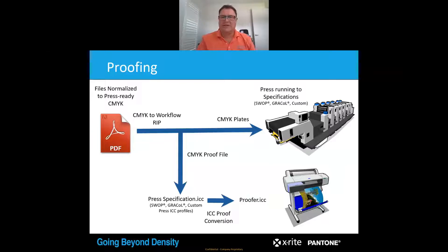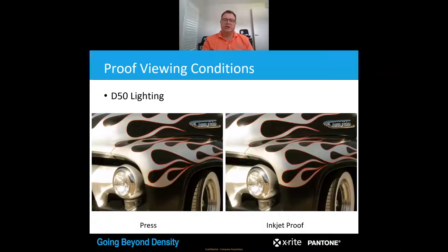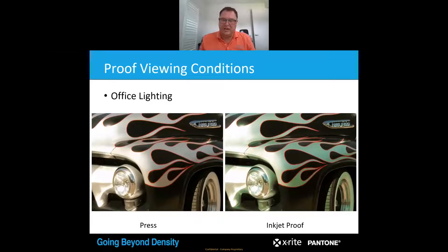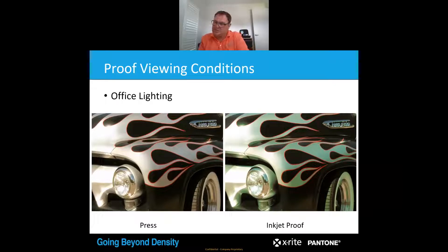The purpose of the proof is to be a visual representation of the job — not the colour standard for the job. Standardising lighting conditions is extremely important when you're visually looking at samples. You can look at the same sample on press and from your inkjet proof under D50 lighting condition — which is the traditional lighting condition used for printing within Australia — and then under office lighting that inkjet proof may look vastly different compared to the actual press print. This physical phenomenon is called metamerism.